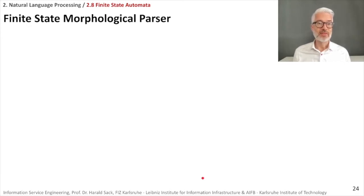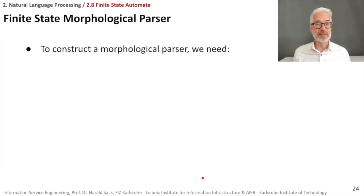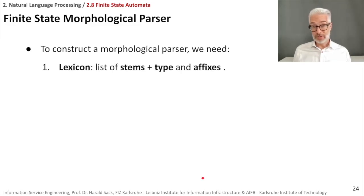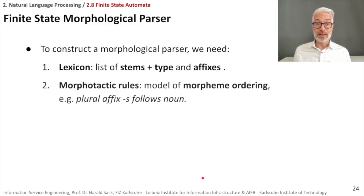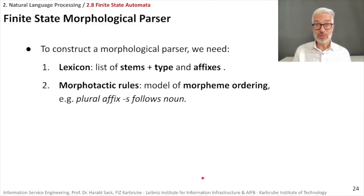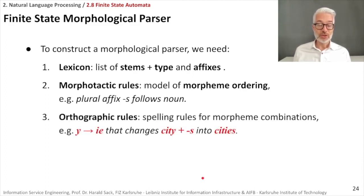To build a finite state morphological parser, what do we need? First, a lexicon containing a list of word stems, telling us the type of each word (noun, adjective, etc.) and all affixes. Then we need so-called morphotactic rules — a model of morpheme ordering: what is a prefix, what is a suffix, and what is the order in which they appear.